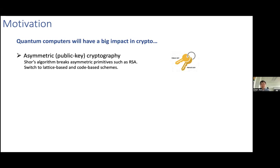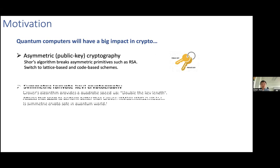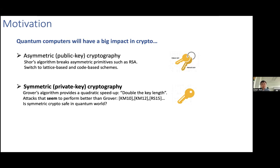So switching to lattice-based and code-based schemes is also important. Besides asymmetric cryptography, the other main part is symmetric crypto, which uses the same key to encrypt and decrypt data. In the quantum world, the most common quantum attack for symmetric primitives is based on Grover's algorithm, which provides a quadratic speedup for searching an unstructured database. That leads to a straightforward solution: just double the key length to compensate for the quadratic speedup. But the question is, is this enough, or do there exist any unknown clever quantum attacks?